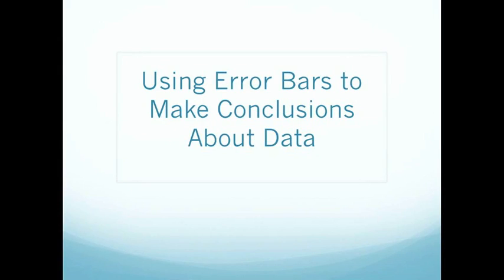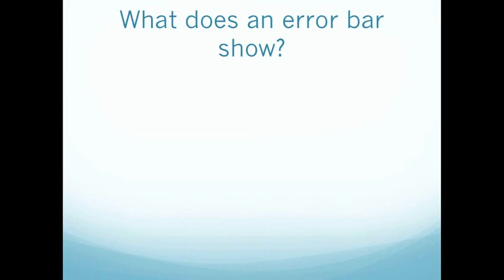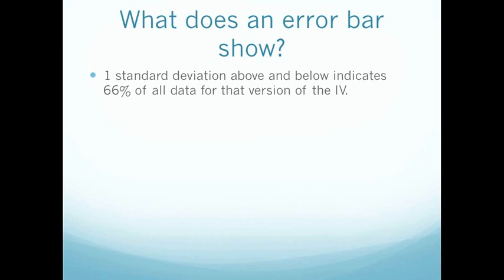Now I'm going to talk about how to use error bars to make conclusions about data. So what exactly does an error bar show on a graph? Well, if we go one standard deviation above and one standard deviation below the average, then this range of data indicates 66% of all data that was collected for that version of the independent variable, amongst all trials.